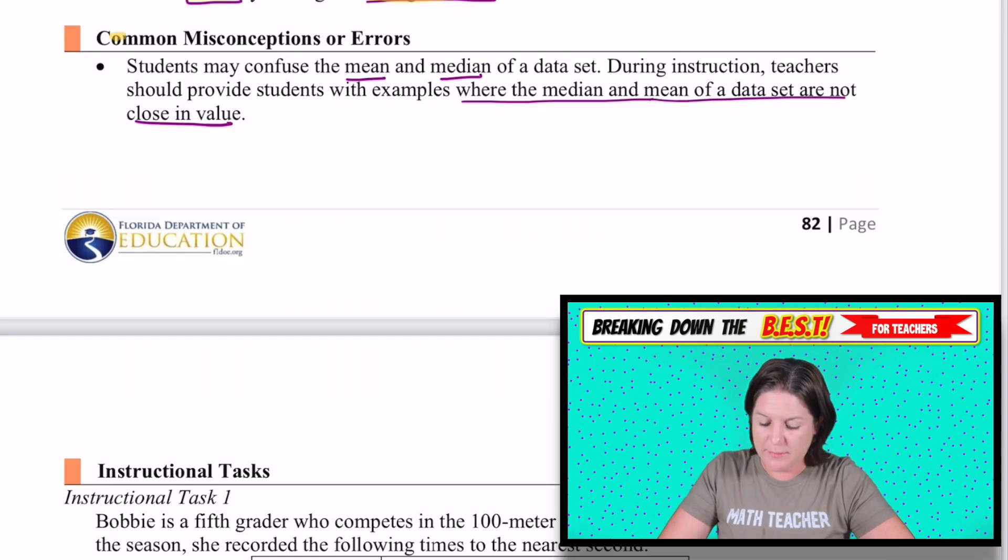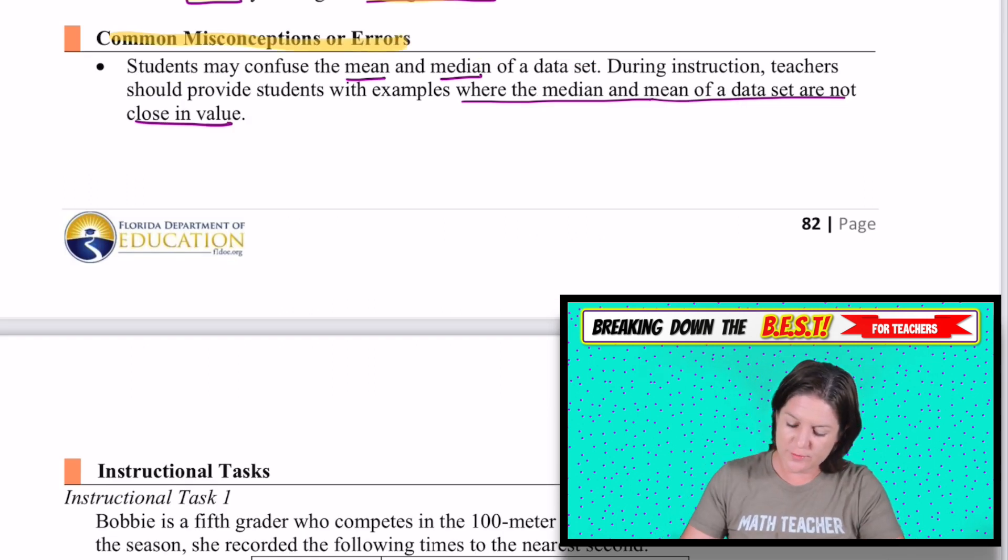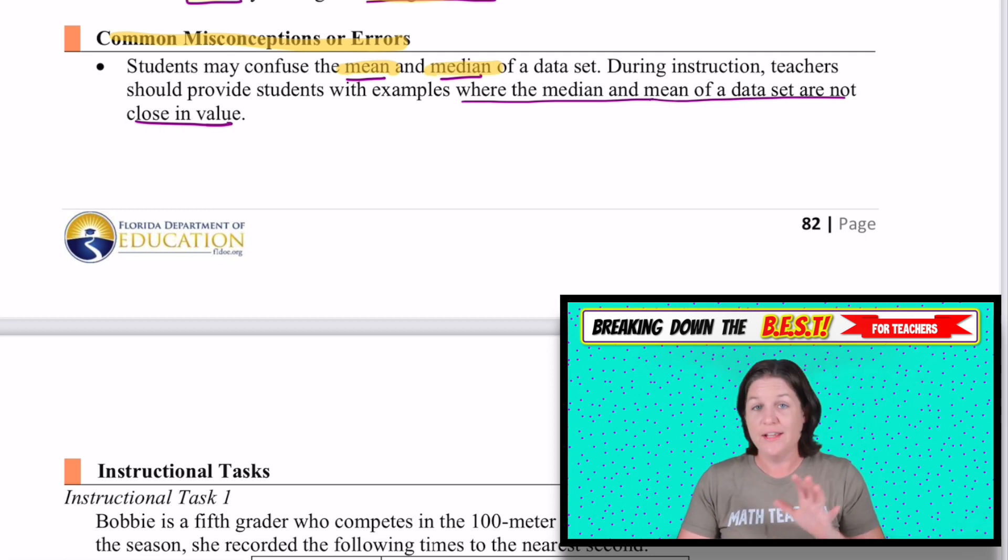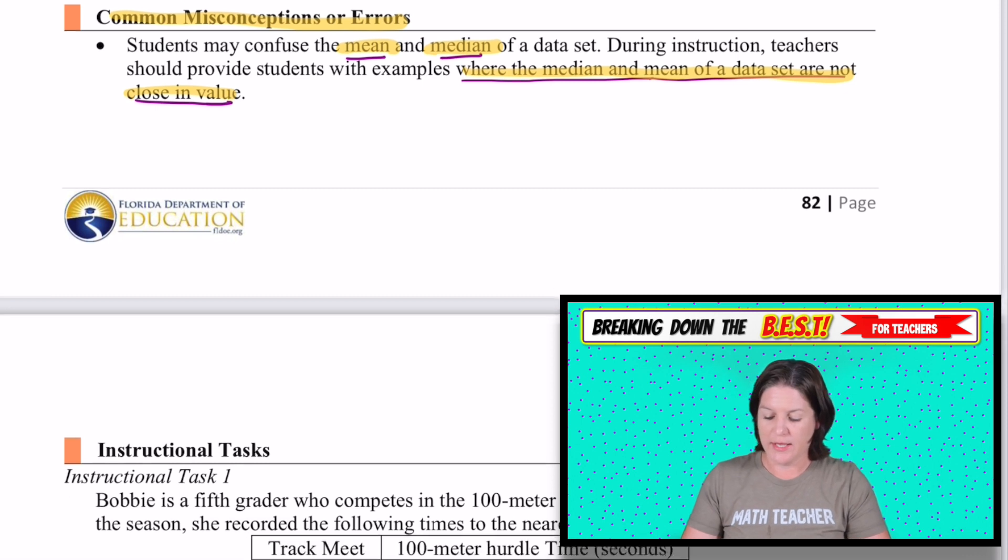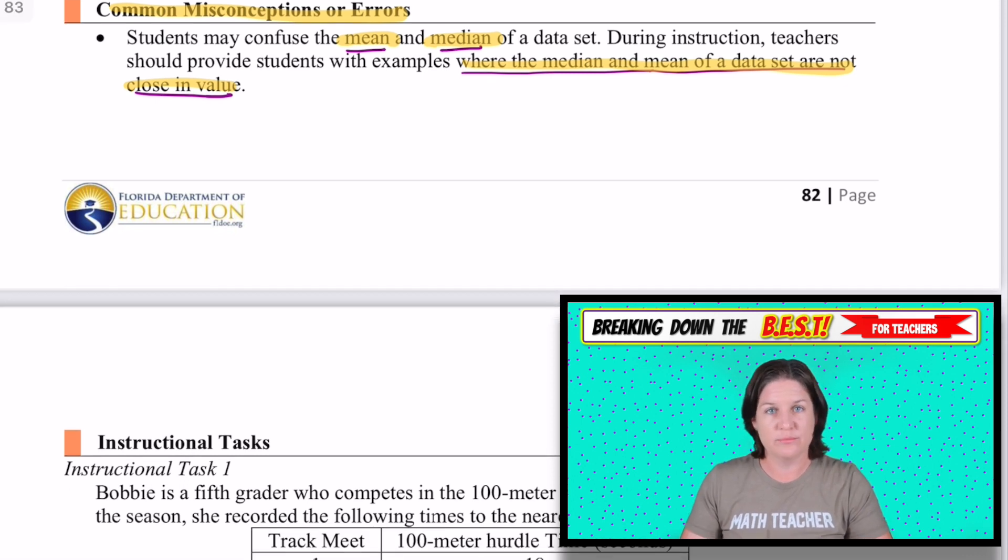Now on to some common misconceptions and errors. It says that students may confuse the mean and the median of a data set. Honestly, they might confuse all of them. But usually I remember in school too, that the mean and the median would, I'd be like, which one is which? So as teachers, our way to combat that misconception is to make sure that we provide examples where the median and mean of the data are not close in value. And to, it's just a lot of practice, practice, practice, practice, giving them ways to help them remember.